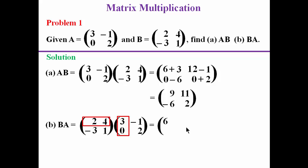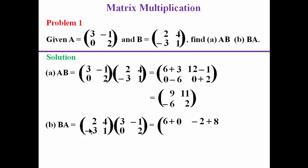4 times 0 gives 0, so we have plus 0. Then we go to the second column: 2 times negative 1 gives negative 2, 4 times 2 gives 8, so we have plus 8. We now go to the second row and pick the first column, then multiply and sum up the corresponding elements.